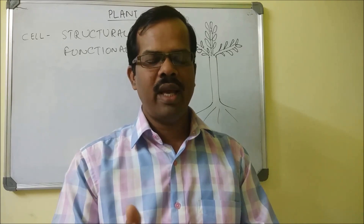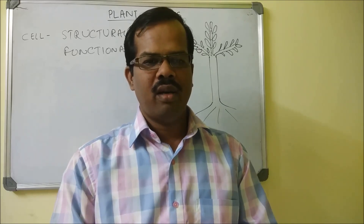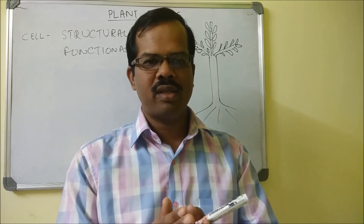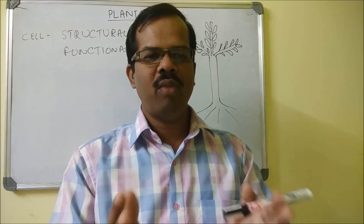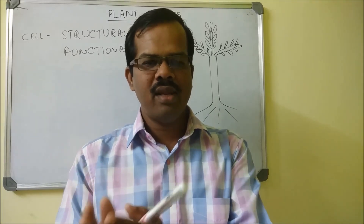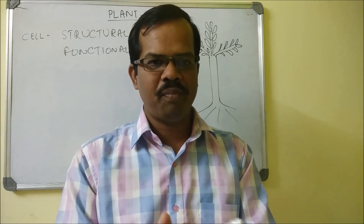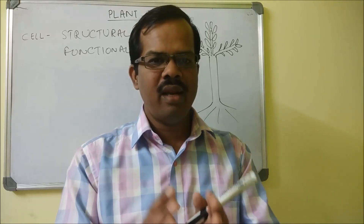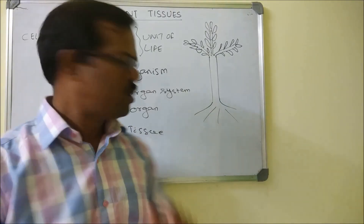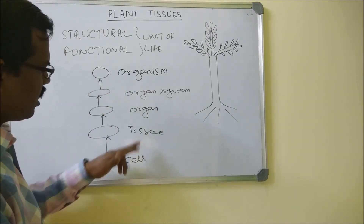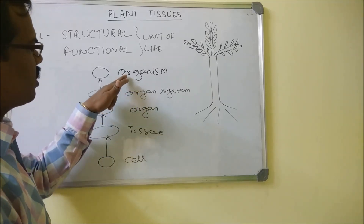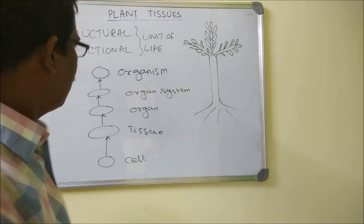A group of tissues will combine together to form an organ — for example, bone tissues group together to form a bone, and skin tissue groups together to form the skin. A group of organs clubs together to form an organ system, like bones, muscles, blood, and skin forming our hands and legs. Multiple organ systems then club together to form an entire organism. So: cells form tissues, tissues form organs, organs form organ systems, and organ systems form an organism.